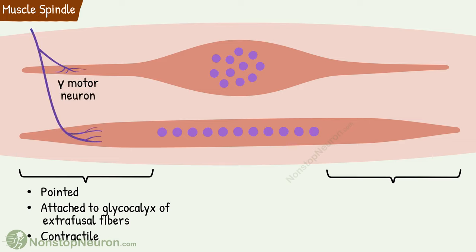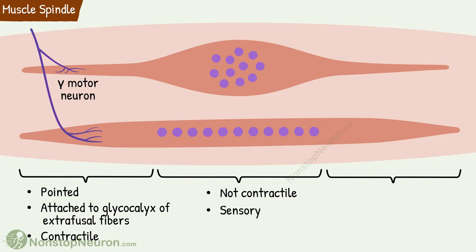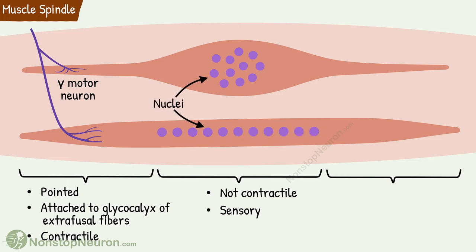This stimulation comes from gamma motor neurons — in simple words, the ends are innervated by gamma neurons. Now let's talk about the central region. The central region has few or no contractile elements, so this portion does not contract; rather, it serves a sensory function. This central portion contains the nuclei of the fiber. Based on the arrangement of the nuclei, the intrafusal fibers are divided into two types.